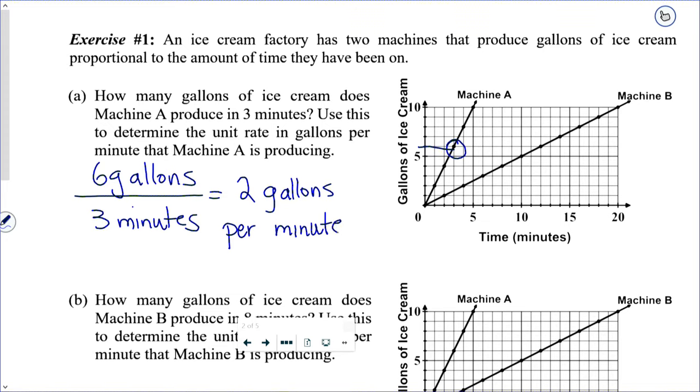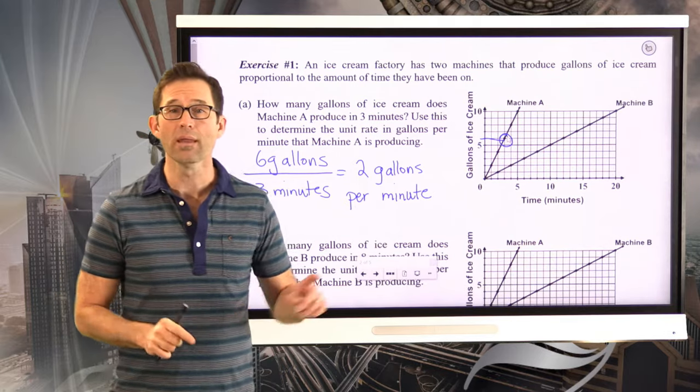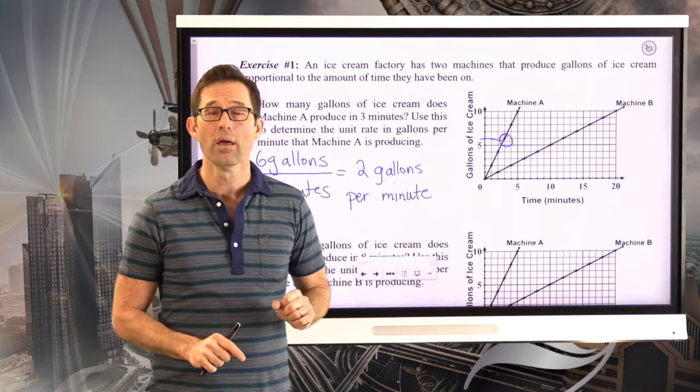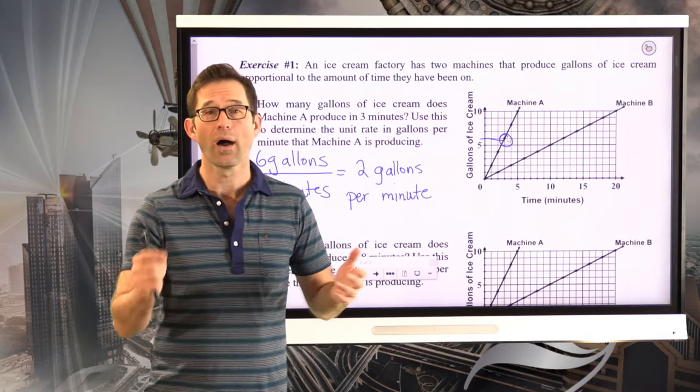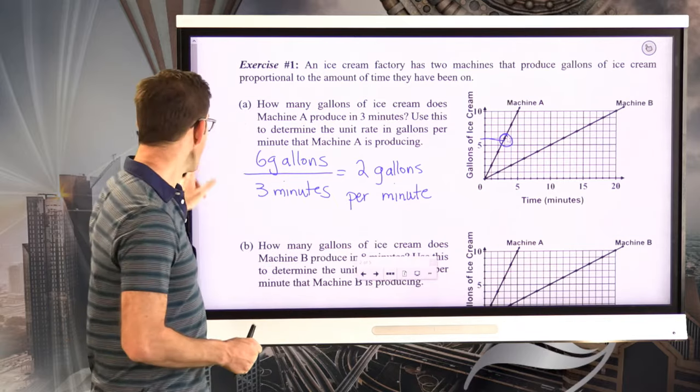Now remember, we want to have units on this, and specifically the units are going to be gallons per minute, always the units of the numerator per one unit of the denominator, two gallons per minute. That's kind of great, because it tells us that for every minute that machine A is on, another two gallons of ice cream are produced.